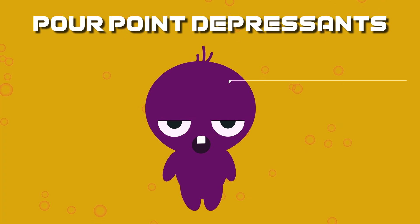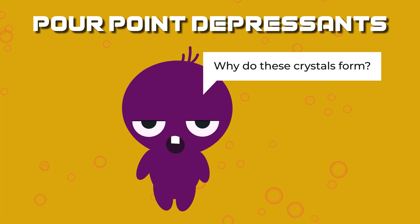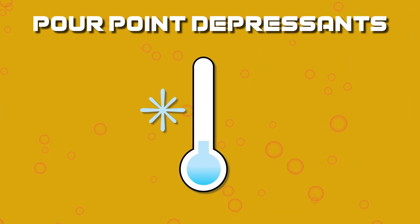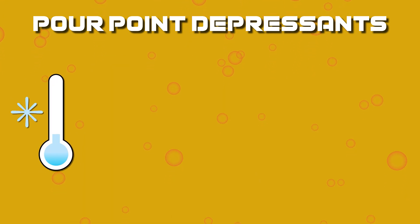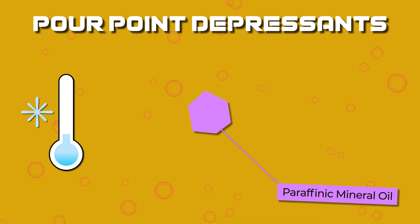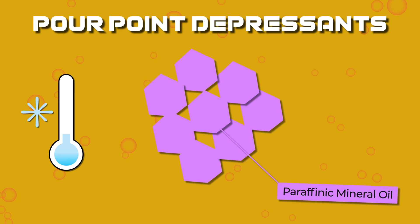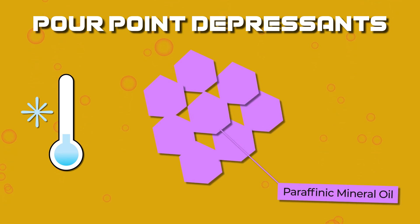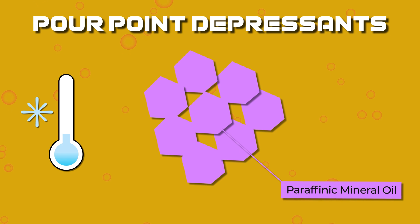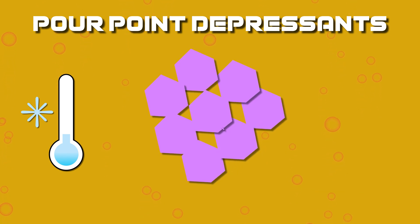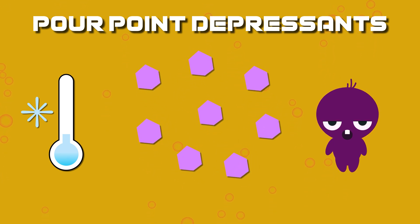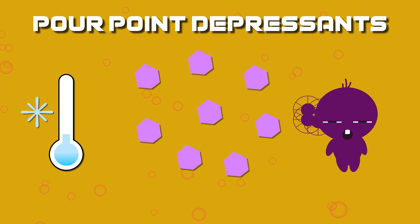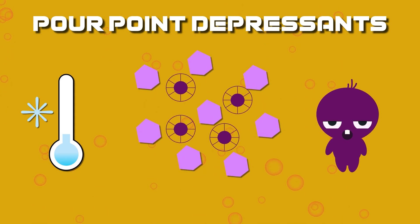So you might ask, why do these crystals form? Well, the pour point of an oil is approximately the lowest temperature where it will remain fluid. In cold temperatures, paraffinic mineral oils can form wax crystals. These solid crystals form an intertwined network like a spiderweb or a beaver dam that prevents the remaining fluid from flowing. So PPDs reduce the size of the wax crystals in the oil and their interaction with each other, allowing the oil to continue to flow even at low temperatures.